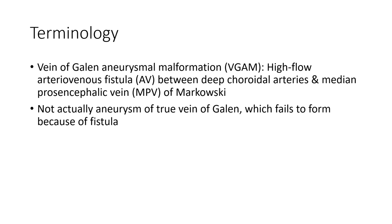Etiology: Vein of Galen aneurysmal malformation is a condition of arteriovenous fistula between deep choroidal artery and median prosencephalic vein. It is not actually an aneurysm of the true vein of Galen, which failed to form because of the fistula.